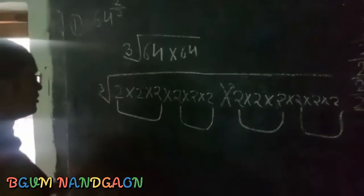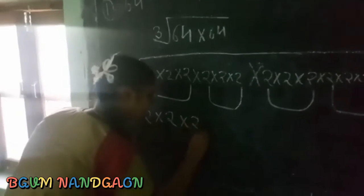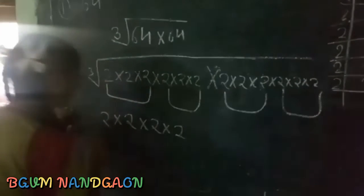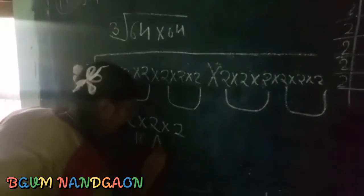So we will take it out. 2 into 2 into 2 into 2, so 4. It was 16. So our answer is 16.